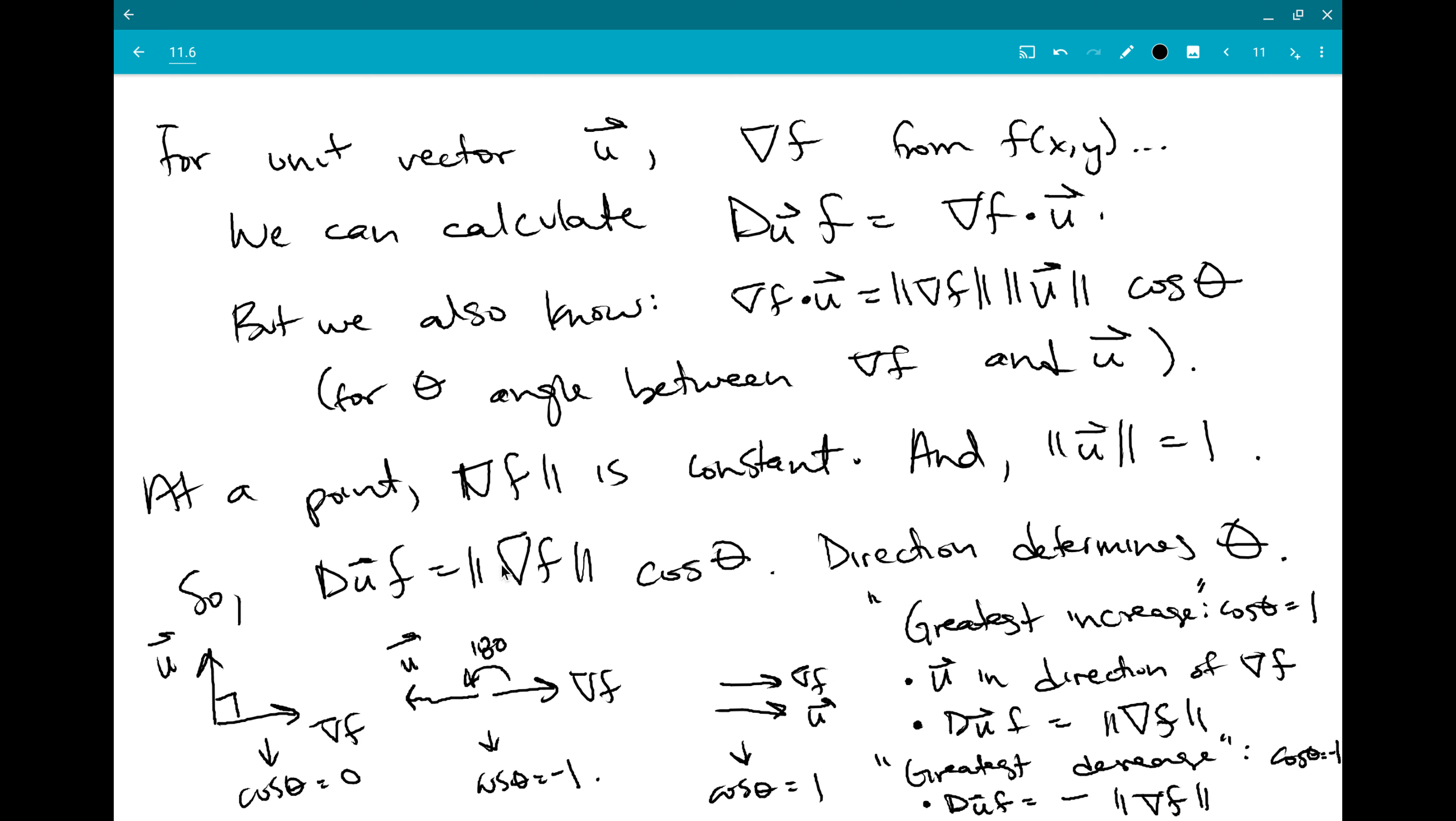Think back to that picture in the example we just did. Instead of going in the direction of the gradient, you can imagine you run backwards down the surface. And that would give you a very large value, but a very large negative one.